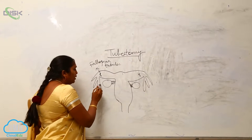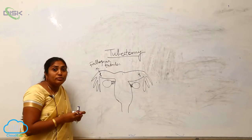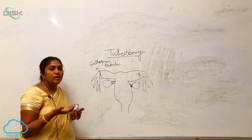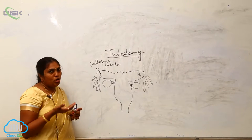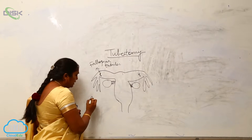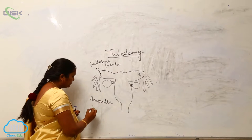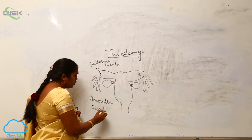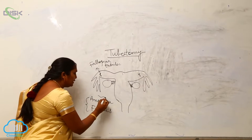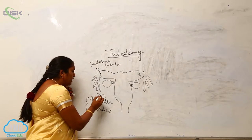So whatever the ovary releases, the egg will enter into that part of the fallopian tubule and will be lodged in the region between the ampulla and the fundus. The ampulla is a swollen-like structure where the egg will come and lodge.